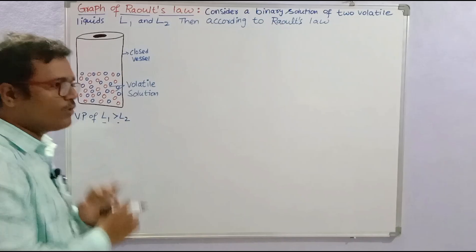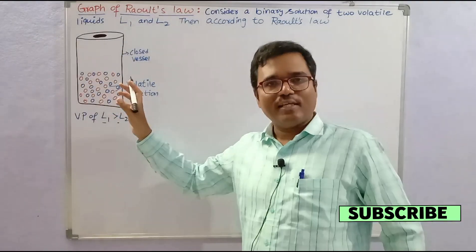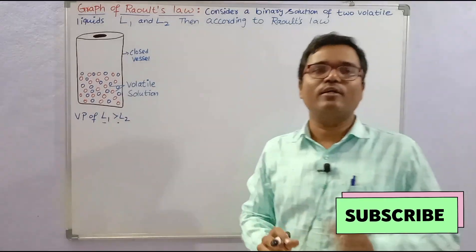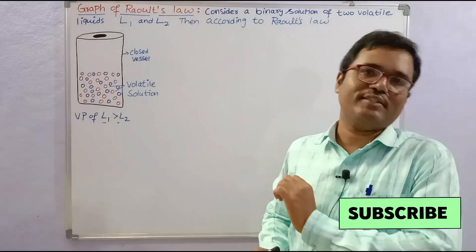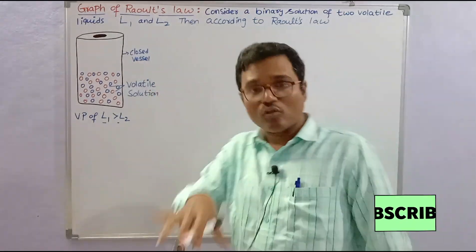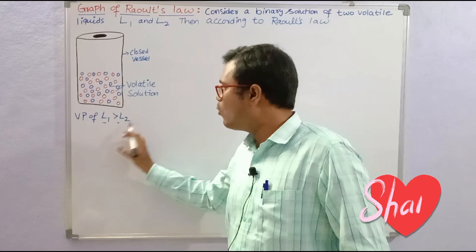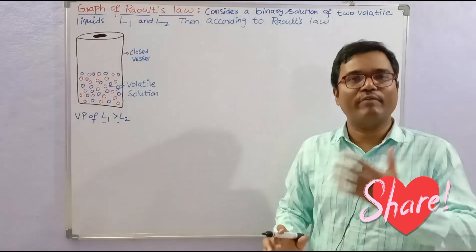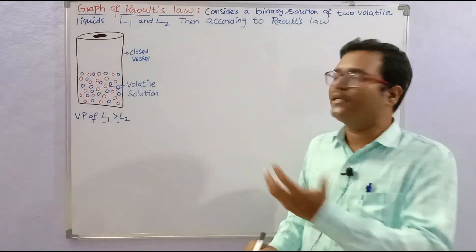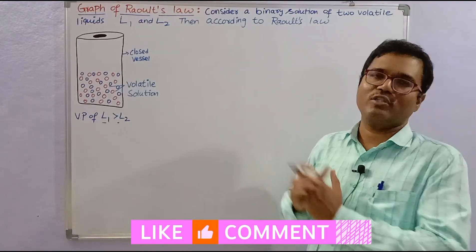To understand the graph of Raoult's law, let us imagine that in a closed vessel we have filled a volatile solution that has two liquids, liquid 1 and liquid 2. Also imagine that the vapour pressure of liquid 1 is more than the vapour pressure of liquid 2. These are the imaginary situations to understand Raoult's law.